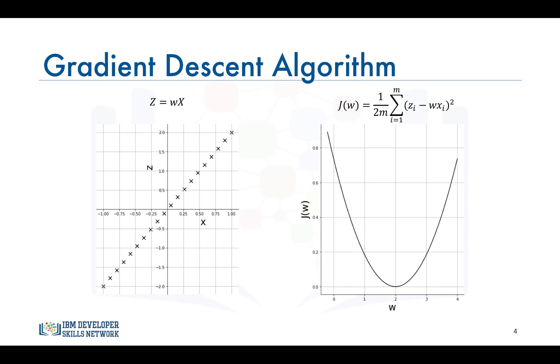Gradient descent is an iterative optimization algorithm for finding the minimum of a function. To find the minimum of a function using gradient descent, one takes steps proportional to the negative of the gradient of the function at the current point. What does that mean?